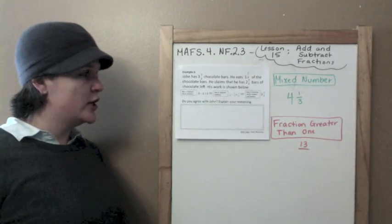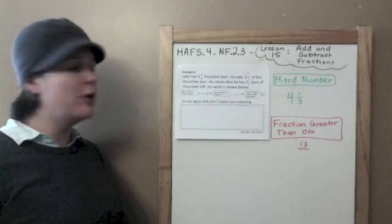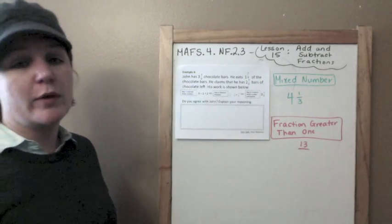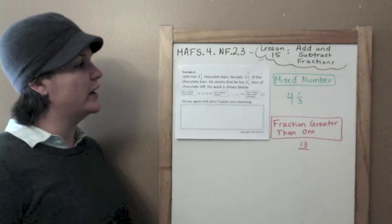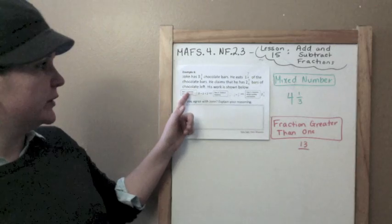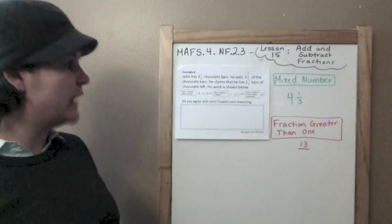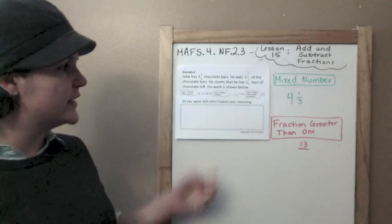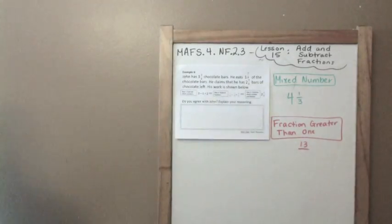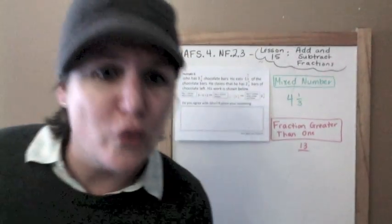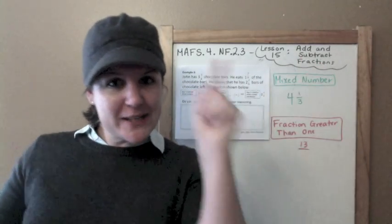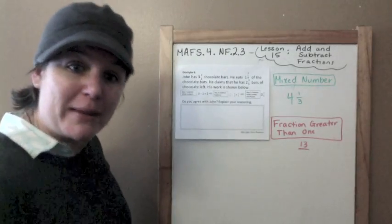Example six: John has three and three-eighths chocolate bars. He eats one and seven-eighths of the chocolate bars. He claims that he has two and four-eighths bars of chocolate left. His work is shown below. Do we agree with John? Explain your reasoning. This is where you get intense — this is what makes the level fours and level fives pop out, because they don't give up on these. They give them a shot. I'm going to give it my best.